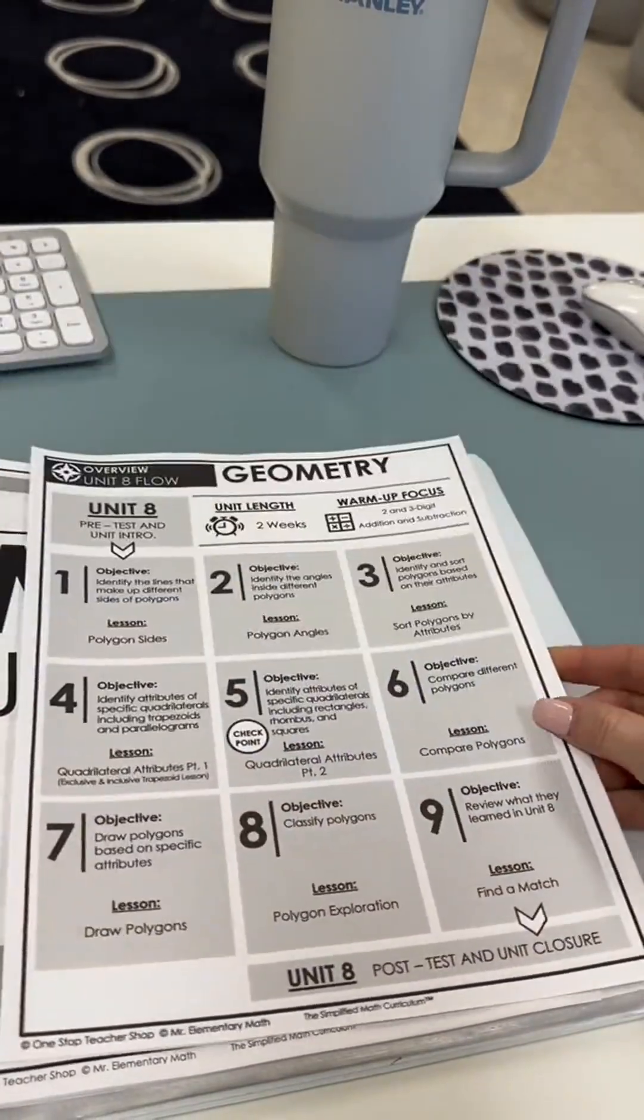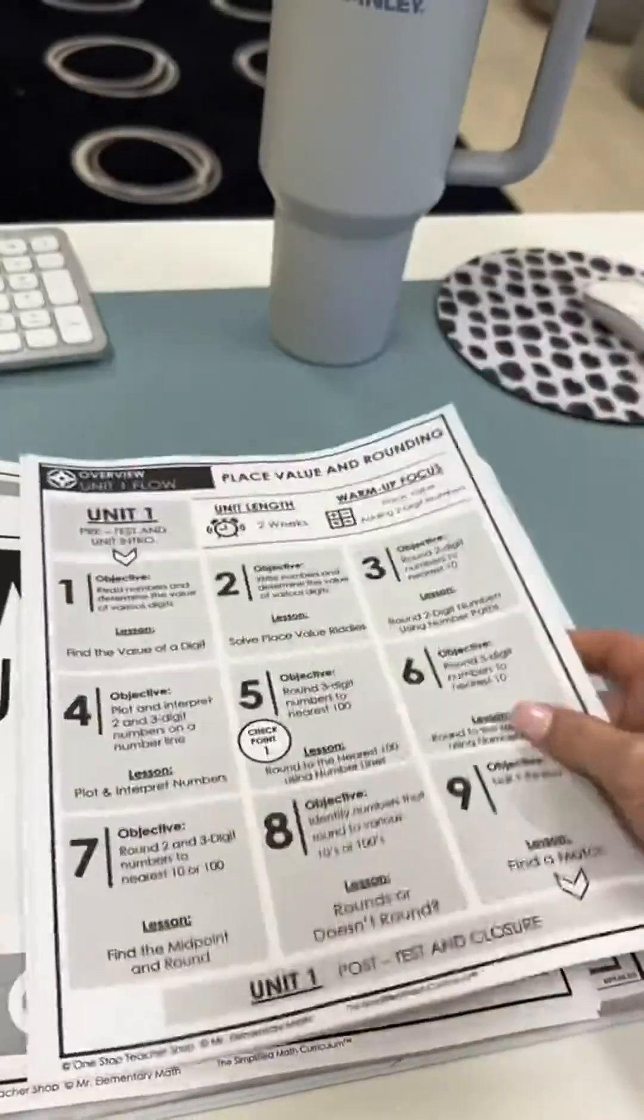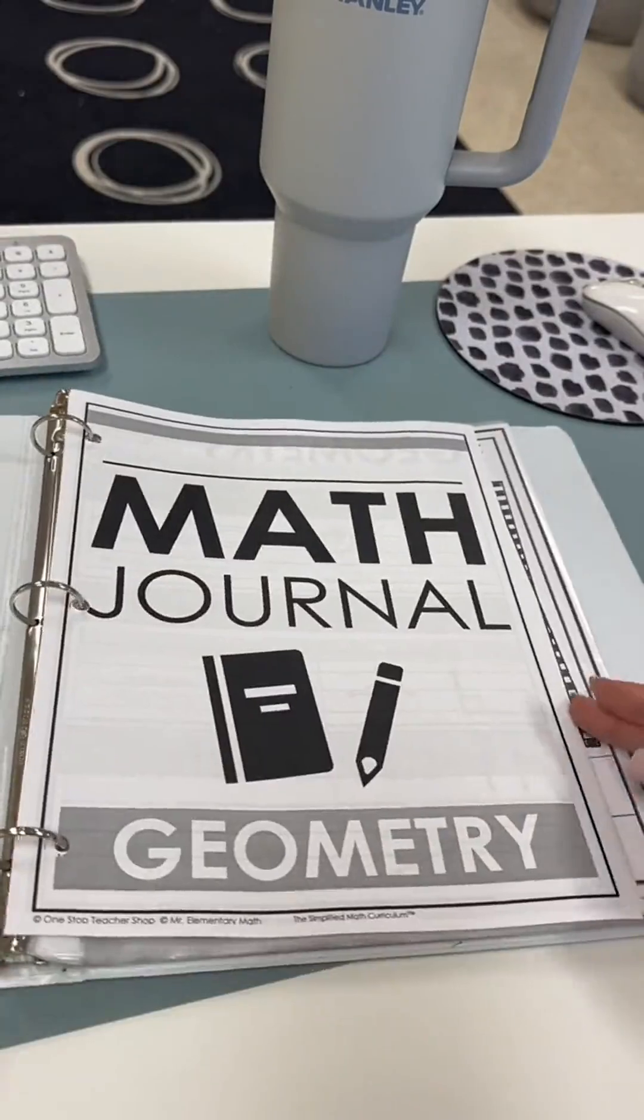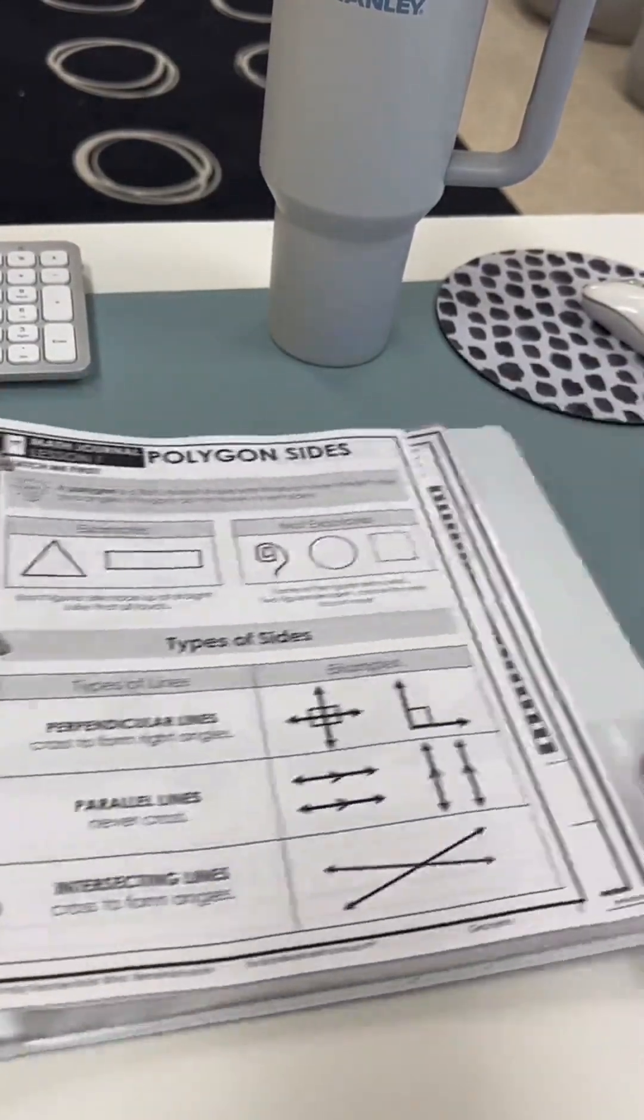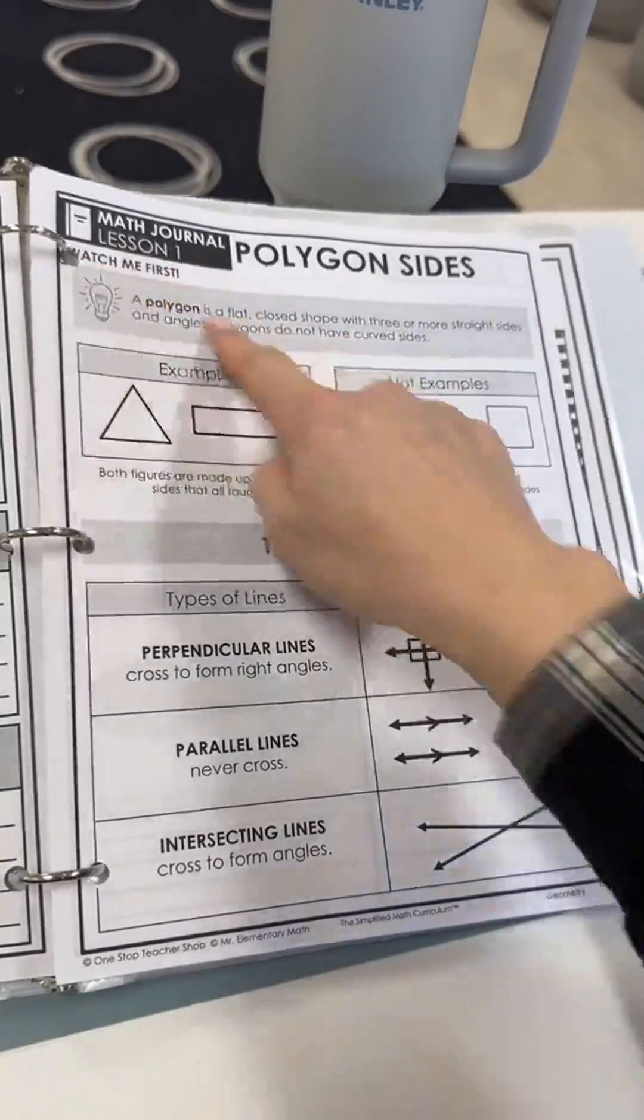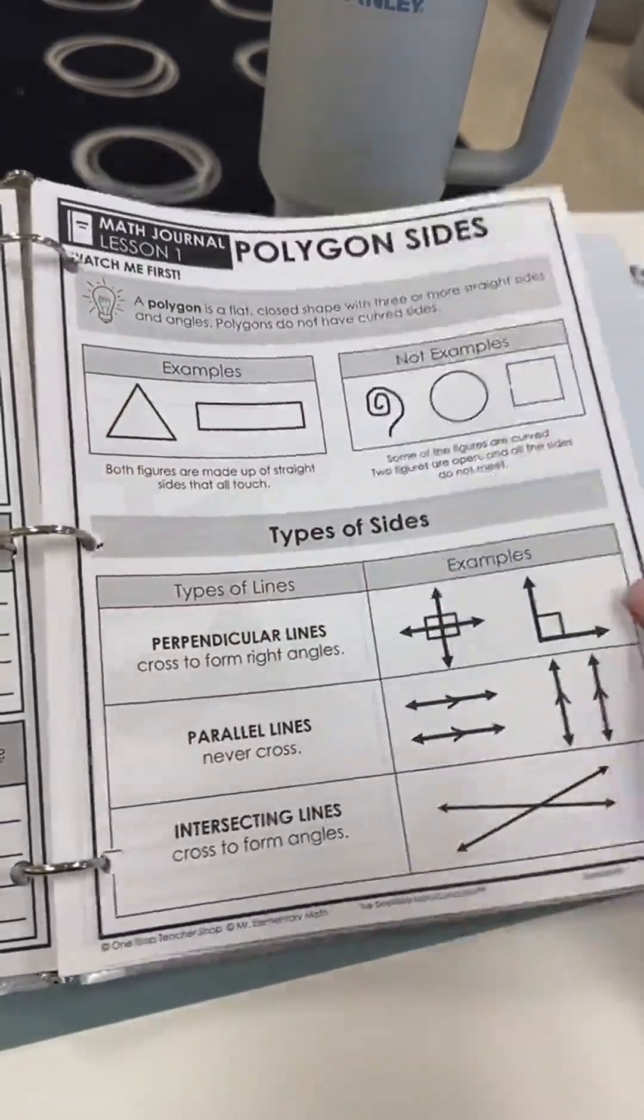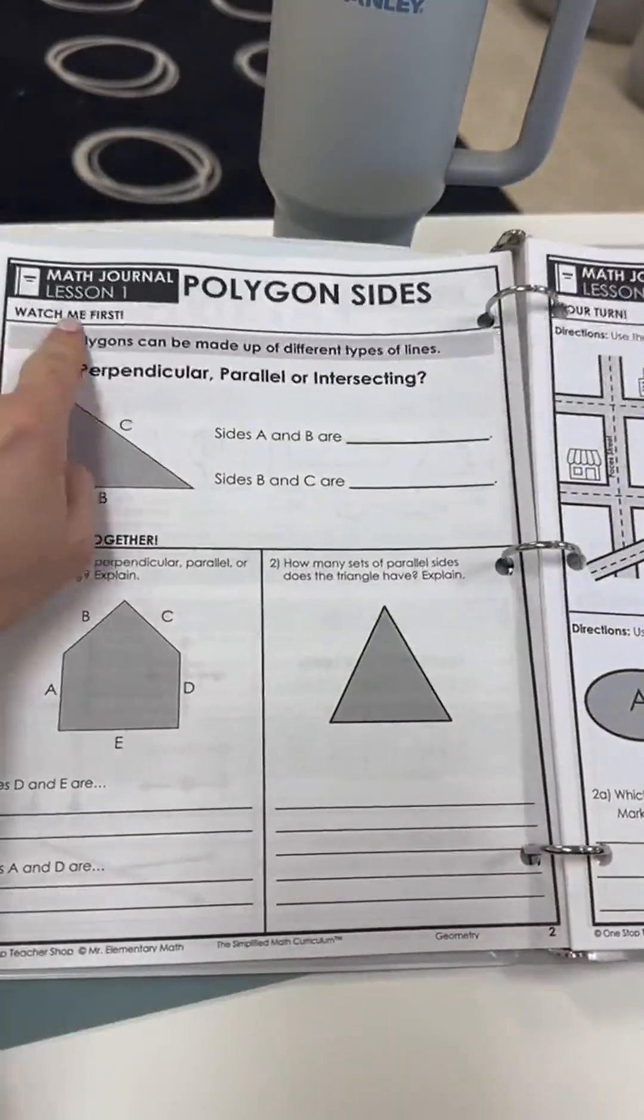I'm also someone who likes routine and I like things that flow together. So the fact that every unit has their own math journal for each student is really amazing. The journal is organized by lesson. It usually starts with the vocabulary page of the things you're going to be covering in that lesson, which also serves as a great reference page later on for students.